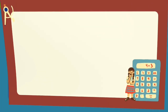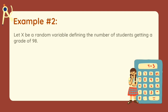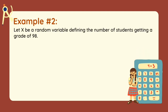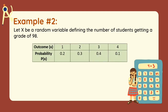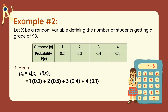Now let's proceed to Example number 2. Let x be a random variable defining the number of students getting a grade of 98. The outcomes are 1, 2, 3, and 4, with probabilities 0.2 for 1, 0.3 for 2, 0.4 for 3, and 0.1 for 4. Applying the formula of the mean: 1×0.2 + 2×0.3 + 3×0.4 + 4×0.1. Our mean is equal to 2.4.